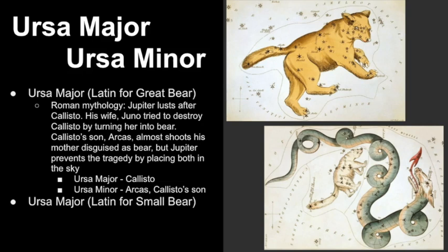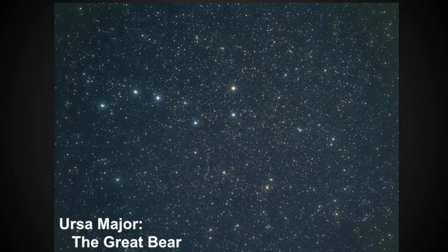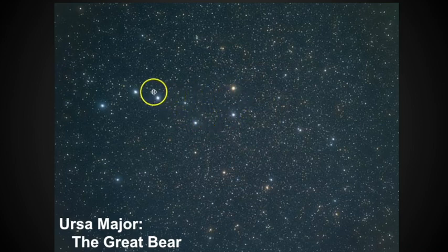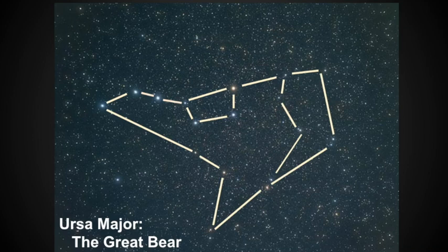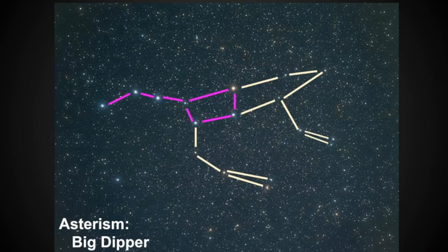Now let's take a look at the pattern of Ursa Major. The thing that probably stands out to you is the Big Dipper. The Big Dipper is a smaller pattern within the larger constellation of Ursa Major. These depictions can vary depending on which star maps you're looking at, but the Big Dipper within the constellation is important because it will be used to point out other constellations in the sky.